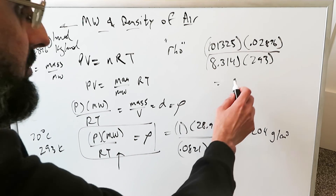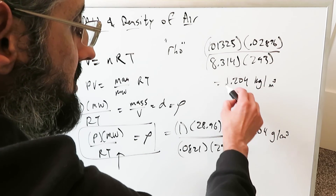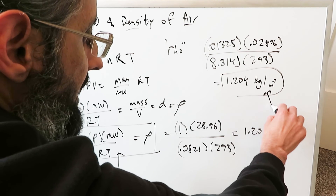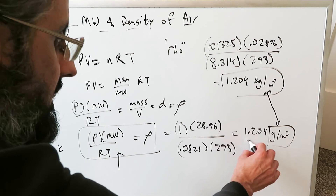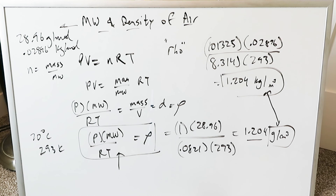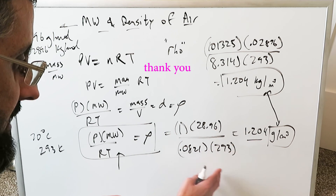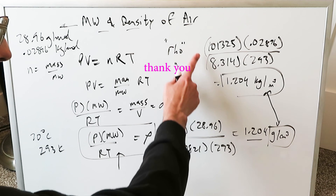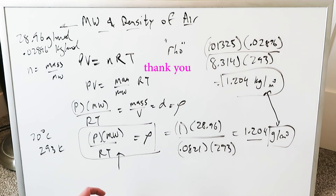And what are the units now? 1.204 kilograms per meter cubed. Kilograms per meter cubed is another unit for density, as is grams per centimeter cubed — both computations are valid. Now you know how to determine the density of air and the molecular weight of air. You can use the set of units giving grams per centimeter cubed, or use pascals with R = 8.314 in kilograms per mole. And that's it for this video. Thank you for watching.